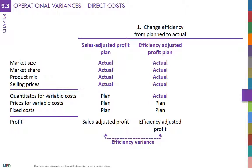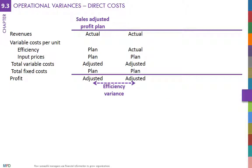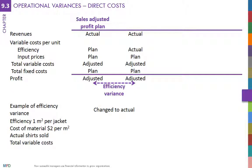Efficiency is defined as the input-output ratio. For instance, how much material is required per jacket is an efficiency ratio. If a company manufacturing shirts plans to use one square meter of fabrics per shirt at 2 euros per square meter, the planned total cost of fabrics per shirt is 2 euros.